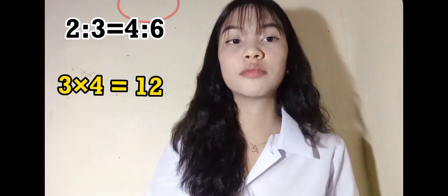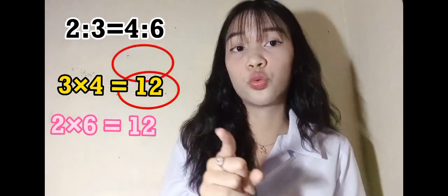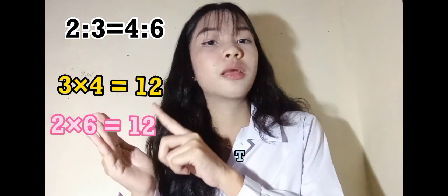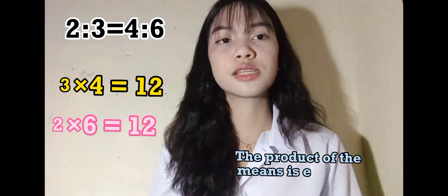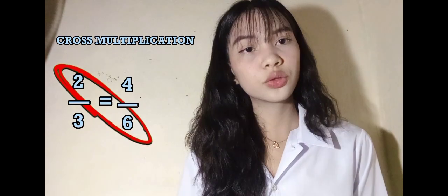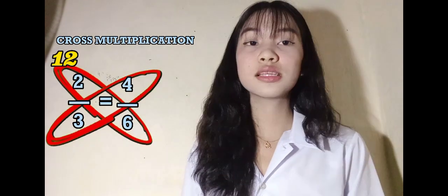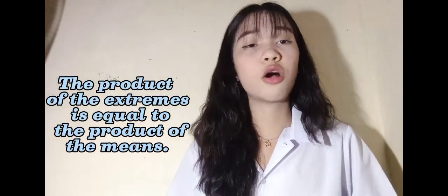To check if these two ratios are equal, multiply the means: 3 times 4 is equal to 12. Then multiply the extremes: 2 times 6 is also equal to 12. The product of the means is equal to the product of the extremes. You can also use cross multiplication: multiply 2 and 6 to get 12, and multiply the means to also get 12.